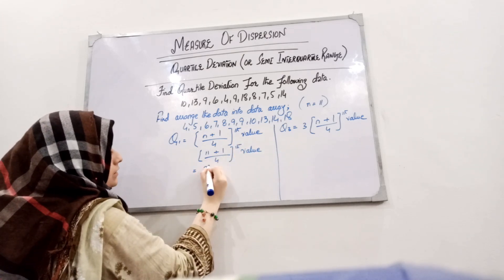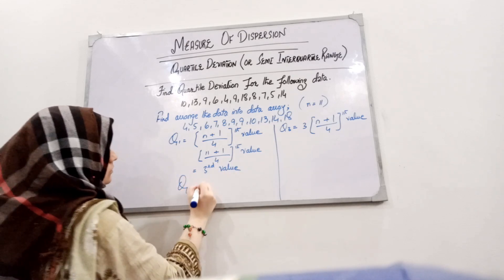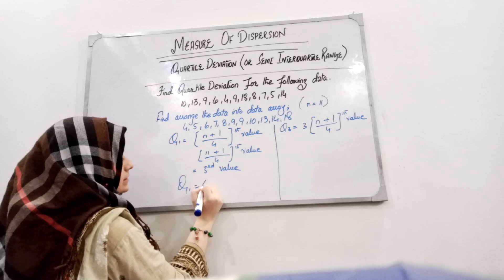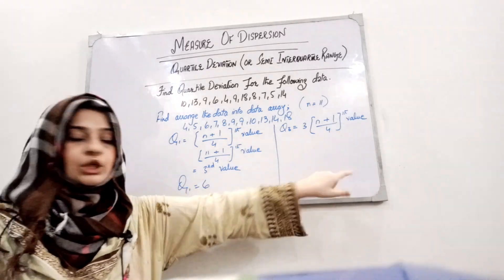we will get the third position. Now let's see what is the third value: one, two, three - six is the third value. With the same method, we will find out Q3.